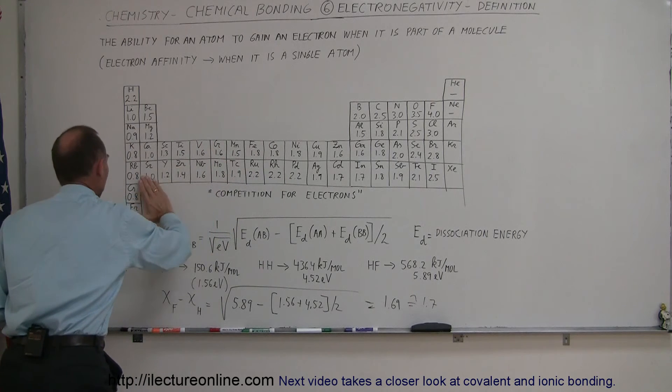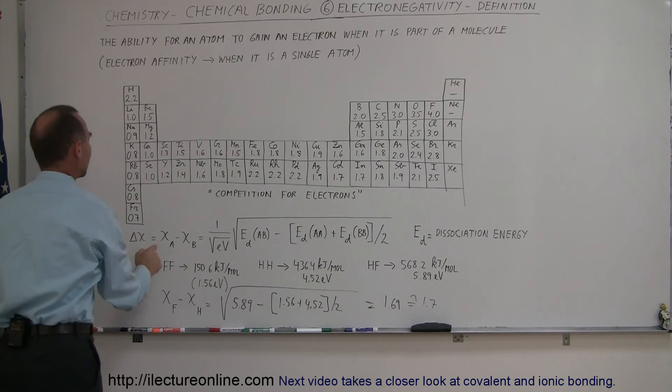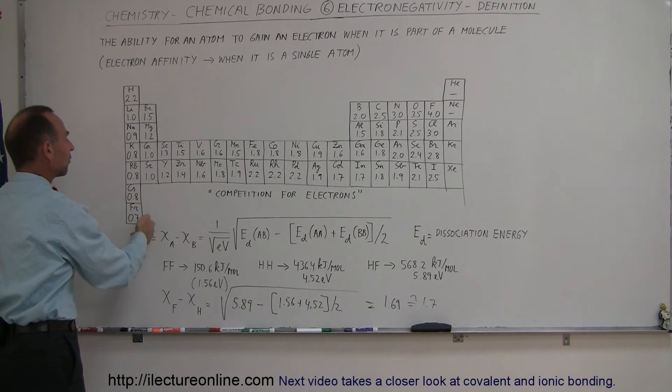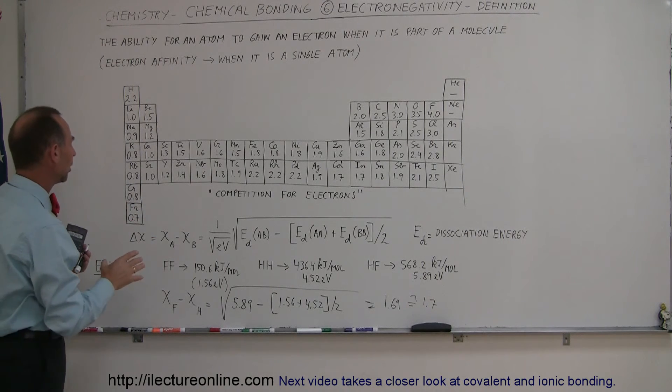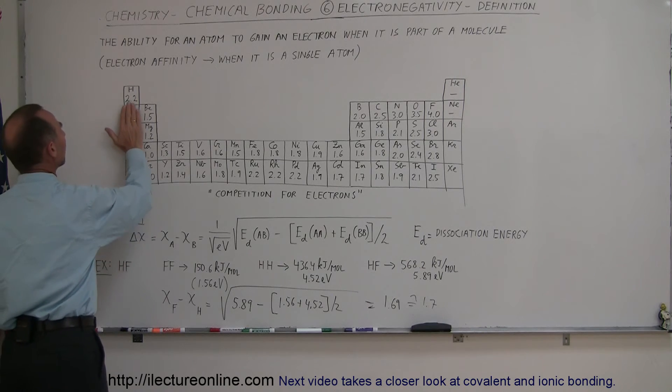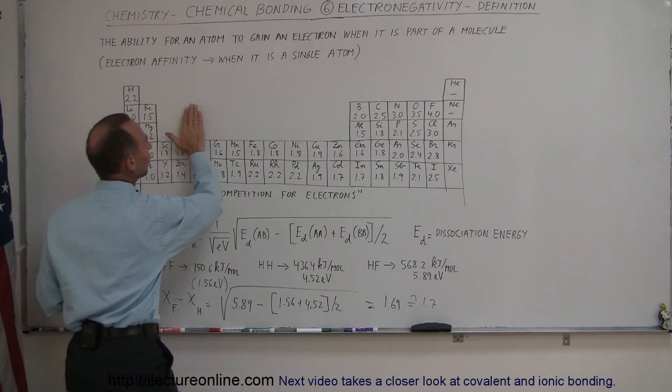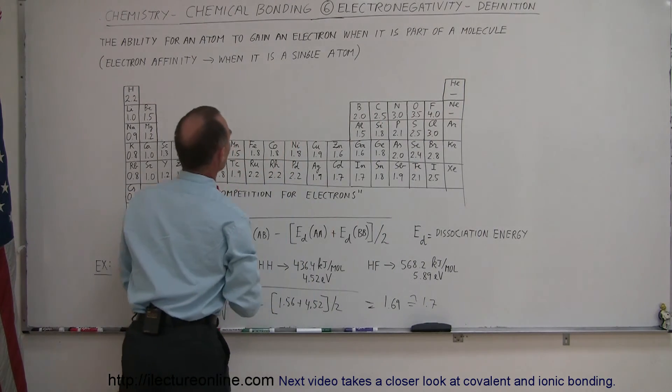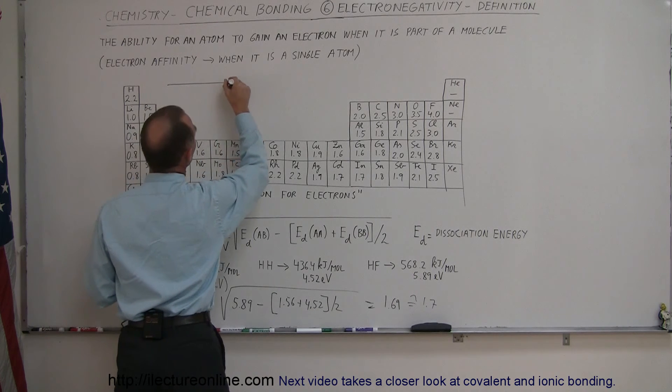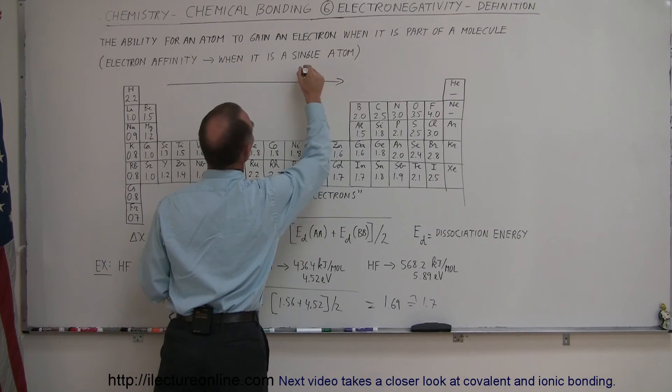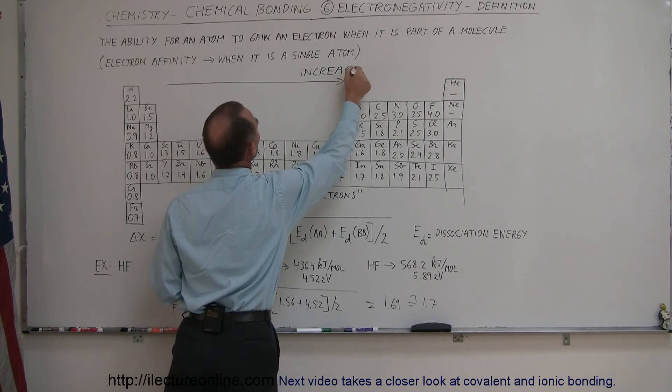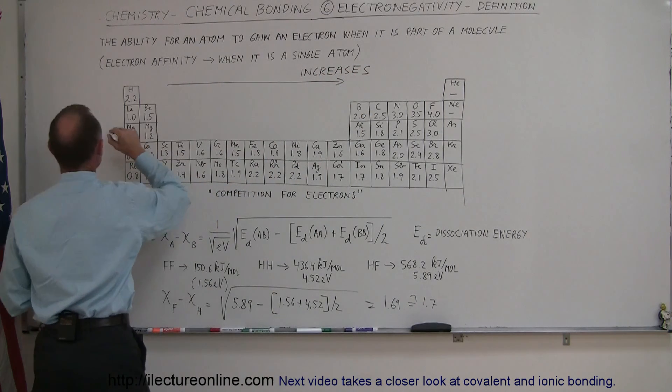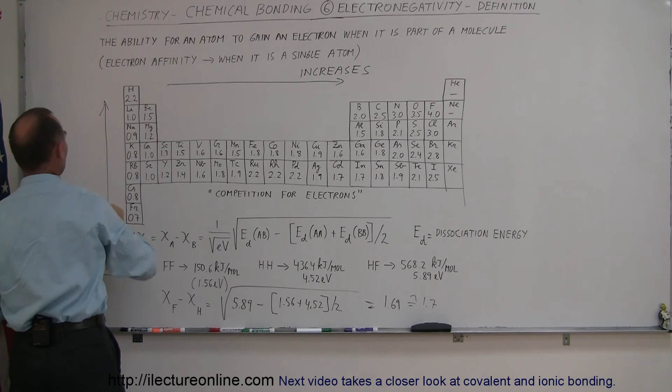Now on the other end of the periodic table, down and to the left here, you see that electronegativity has very small numbers, so those atoms have a very weak pull towards electrons. Notice that it goes up as we go up on the periodic table, notice that it goes up when we go to the right of the periodic table. So we can see that the electronegativity increases as you go from left to right, and also notice that the electronegativity increases as we go from bottom to top.